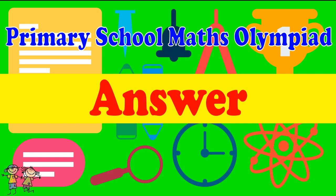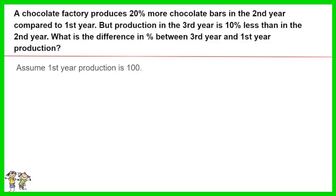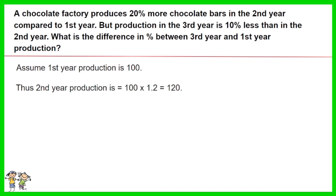Here is the recommended answer. For ease of calculation, let's assume the first year production is 100 chocolate bars. Given that the second year production is 20% more than the first year, thus second year production equals 100 times 1.2, which equals 120 chocolate bars.